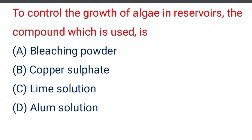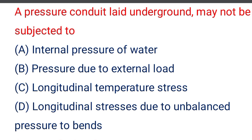Next question: to control the growth of algae in reservoirs, the compound which is used is — option A bleaching powder, option B copper sulfate, option C lime solution, option D alum solution. The correct answer is option B, copper sulfate.